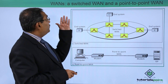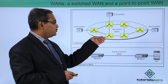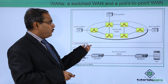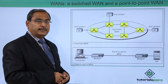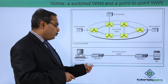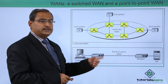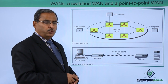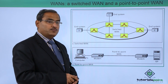Here we can see a switched WAN and a point-to-point WAN. In the switched WAN we have switches and end systems. In the point-to-point WAN, one computer connects to another computer over a long distance — worldwide. We have respective modems doing modulation and demodulation so these computers are connected.